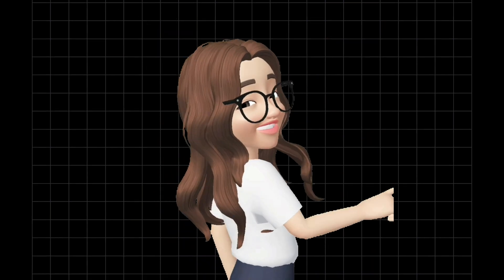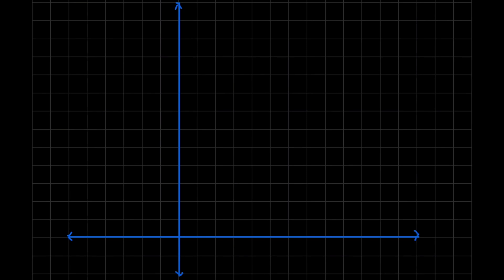Now let us graph the given parabola. We plot all the points computed and the given. Starting at the vertex at (2, 3), then the focus at (2, 4) — 1 unit above the vertex. That is F: (2, 4).